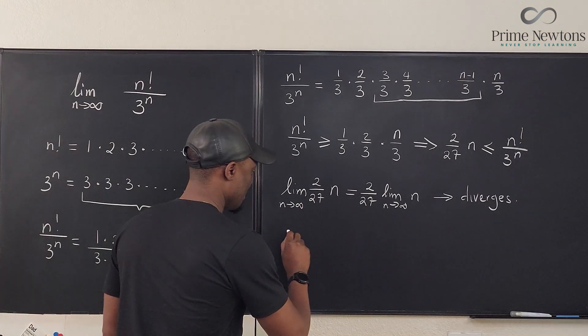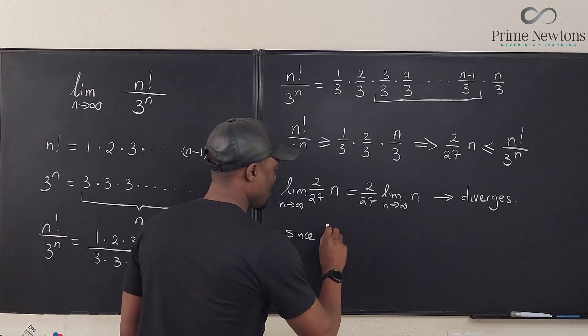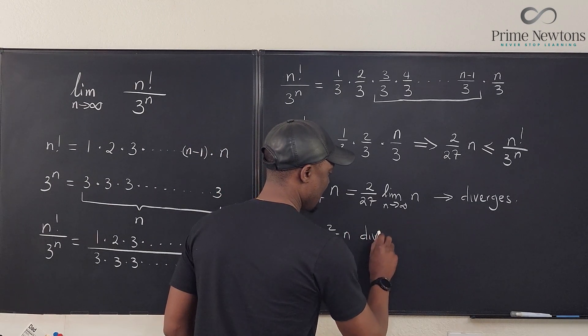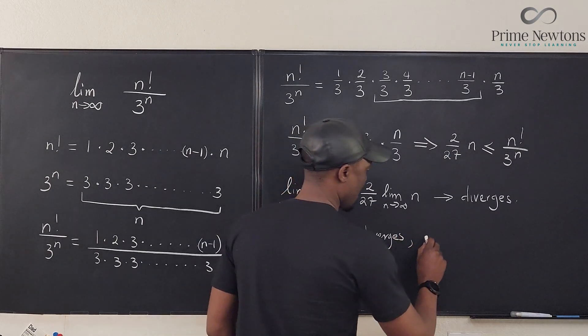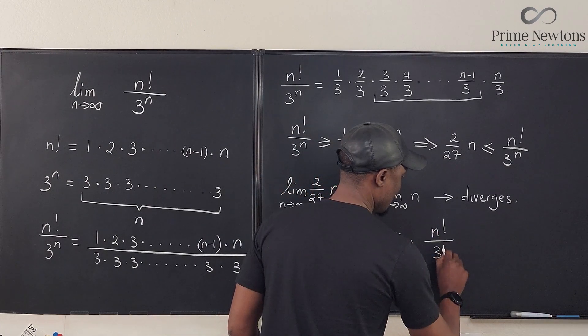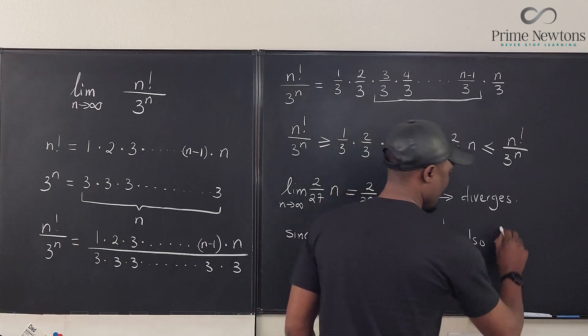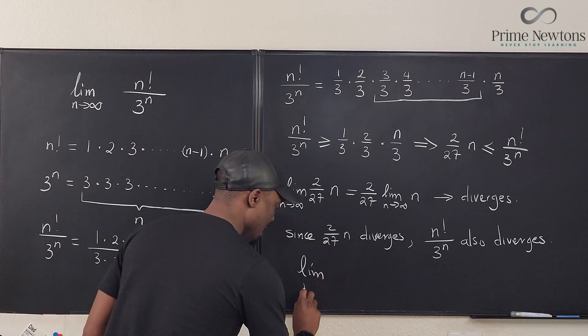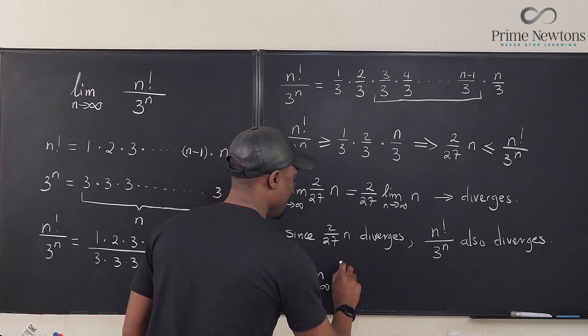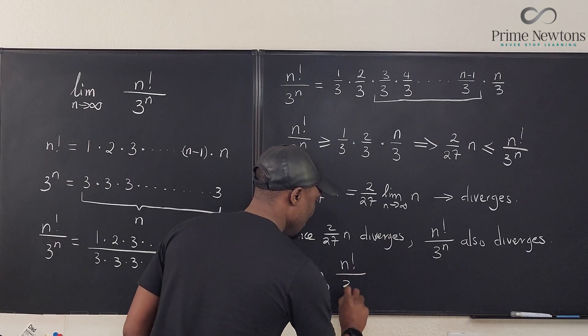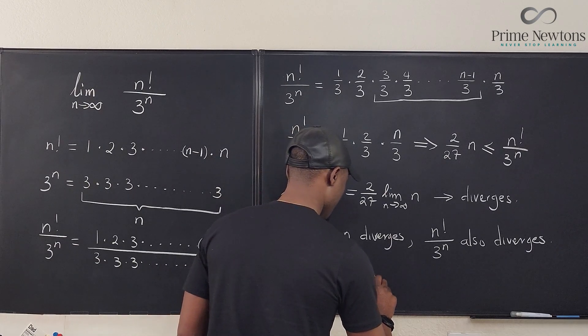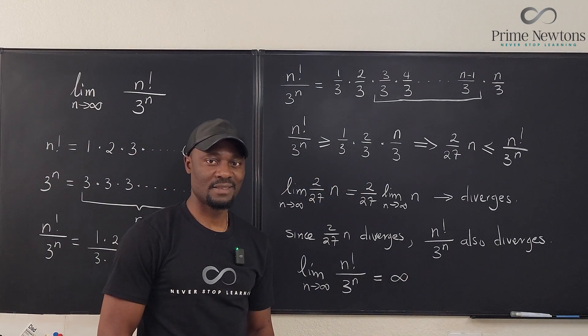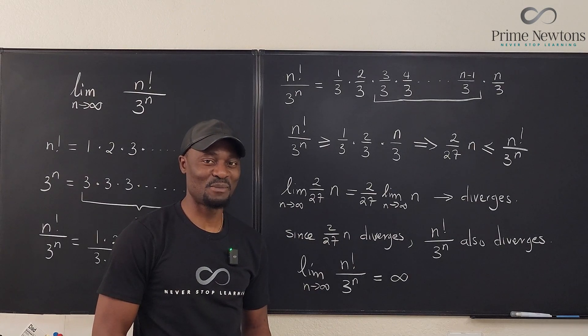So we have since 2 over 27 n diverges, n factorial over 3 to the n also diverges. So you can say the limit as n goes to infinity of n factorial over 3 to the n is positive infinity. Never stop learning. Those who stop learning, stop living. Bye-bye.